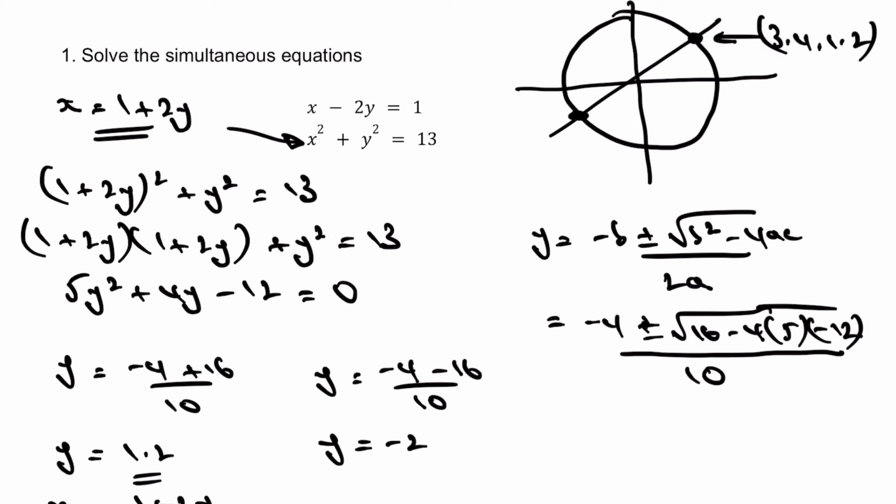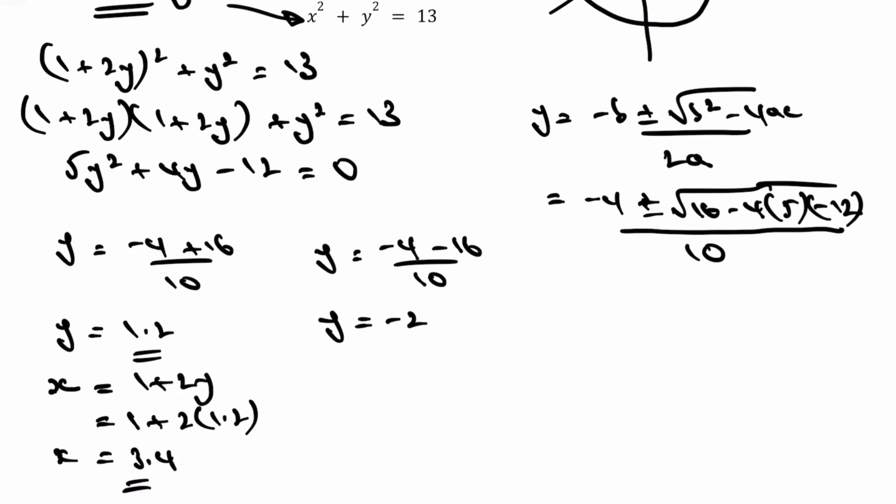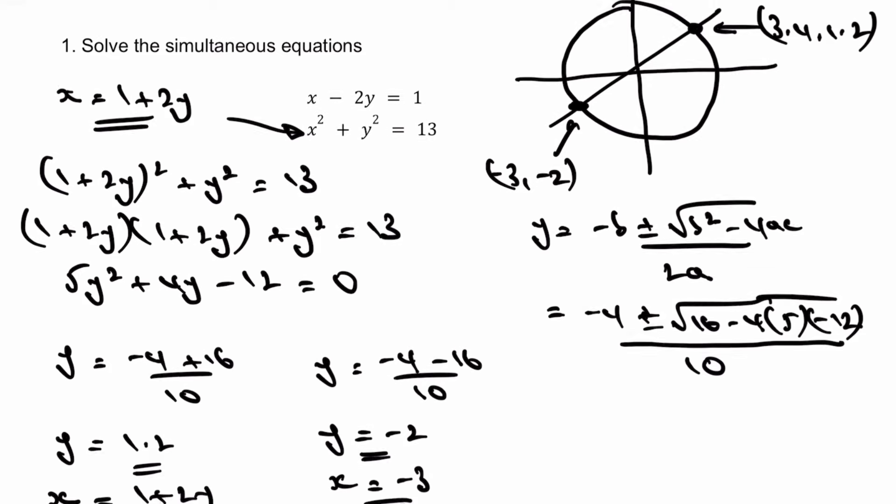And then my other value is when the value of y equals negative 2. So again, I can do exactly the same: x equals 1 plus 2y. And what I should end up with is that x equals negative 3. So therefore, I've got my other two coordinates that when x equals negative 3, y must equal negative 2. And that would be the answer to this particular question.